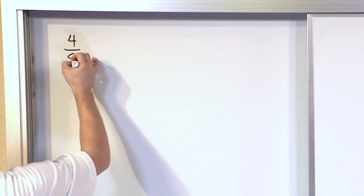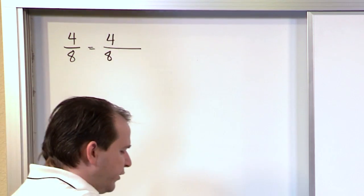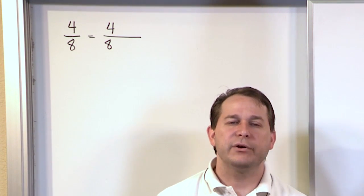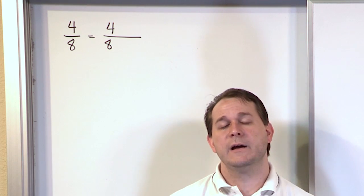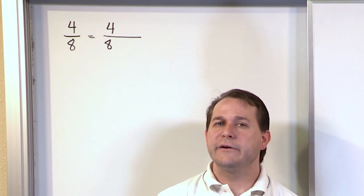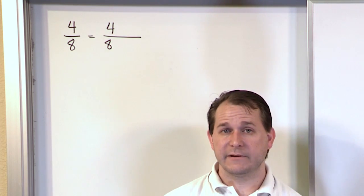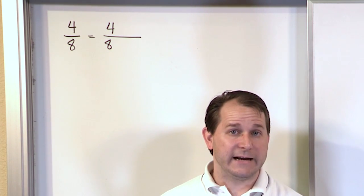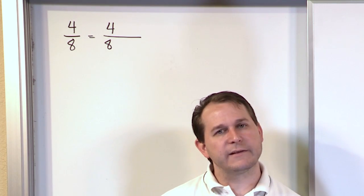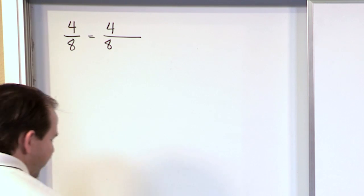Now, one crucial thing to remember from previous sections: you can multiply a fraction by anything you want as long as you multiply the top and the bottom at the same time. Here's the other half of that — you can also divide a fraction by anything you want as long as you divide the top and the bottom at the same time. It's like that balance seesaw, that teeter-totter. You can multiply or divide a fraction as long as you do it to both the top and the bottom.